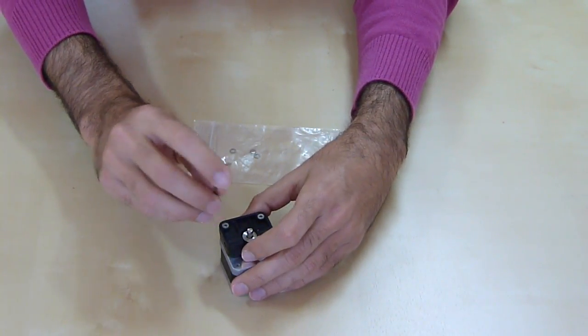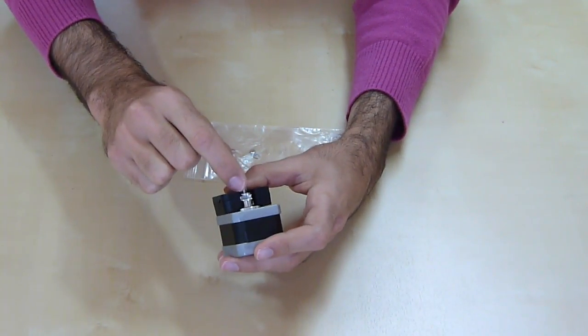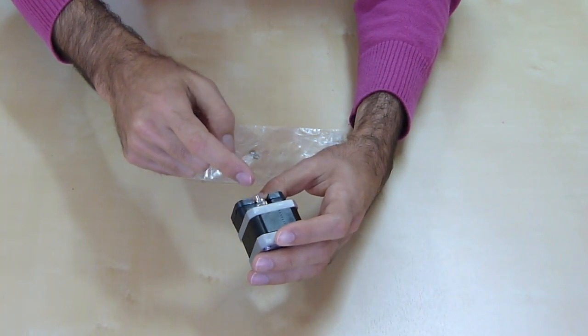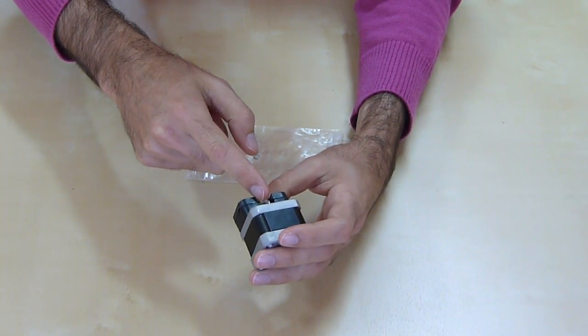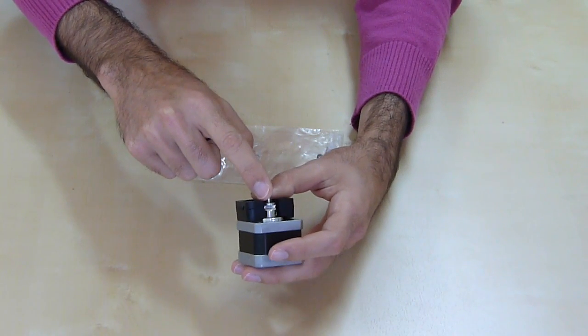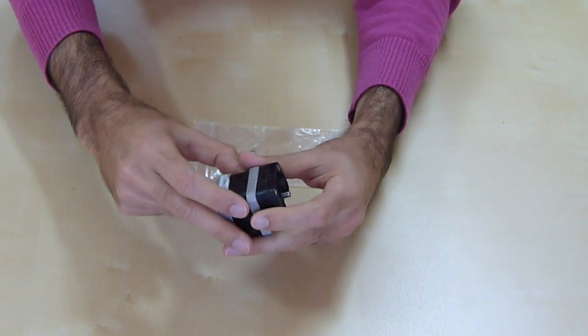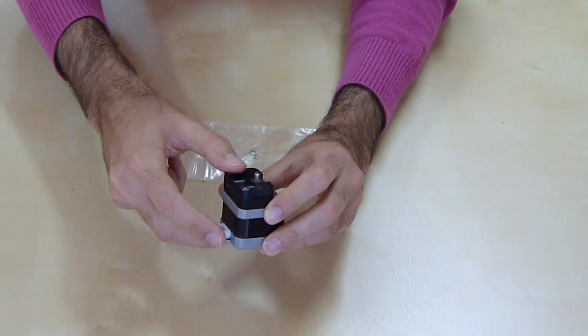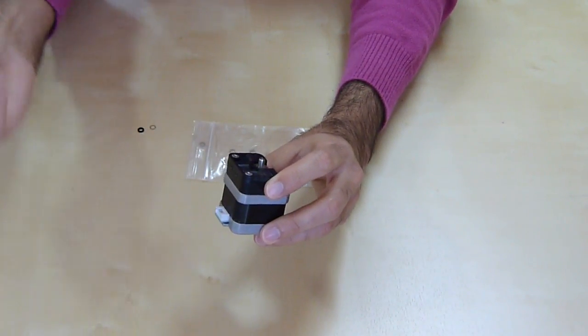If you find that the plunger was sitting too close to the drive gear or too far away, you can always add additional washers or instead of a black washer use a metal one. The rest of the assembly you can see on the video and you will essentially do it in reverse.